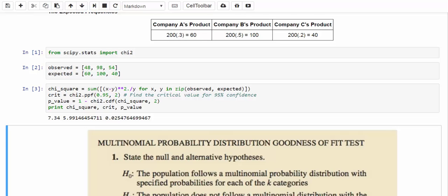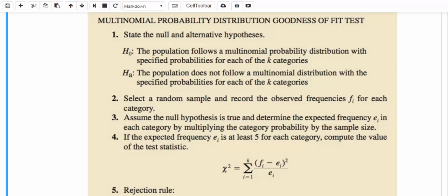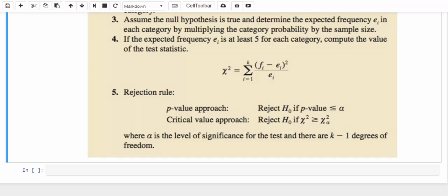Now, let's summarize the procedures for multinomial probability distribution goodness-of-fit test. Step one, as usual, is to formulate our hypothesis. Step two is to get a random sample and record the observed frequencies. In step three, assuming the null hypothesis is true, we can determine the expected frequencies. And then, in step four, we compute the value of the test statistic. In the last step, after we compute the p-value and the critical value, we can draw our conclusions.